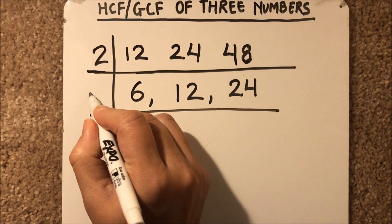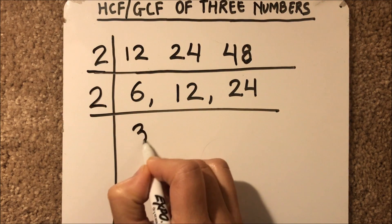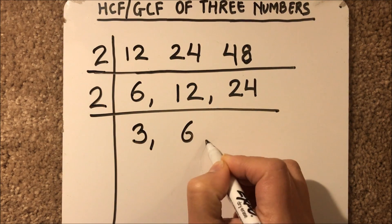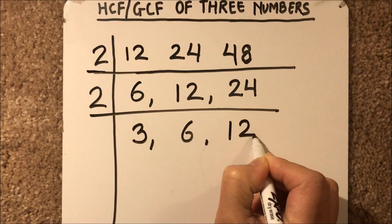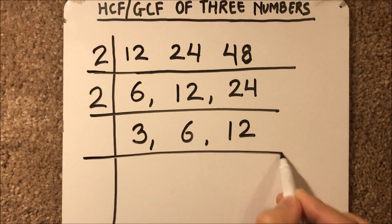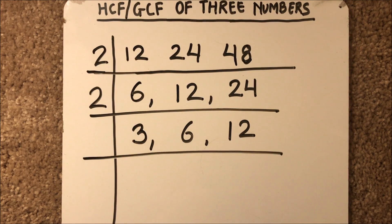So we'll further divide by 2. 2 times 3 is 6, 2 times 6 is 12, and 2 times 12 is 24. Now we see that all three numbers are not even, but we need to find a common factor or common divisor of all three numbers.